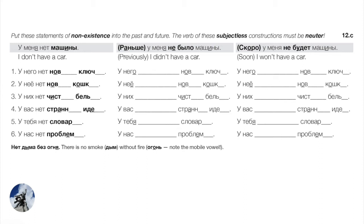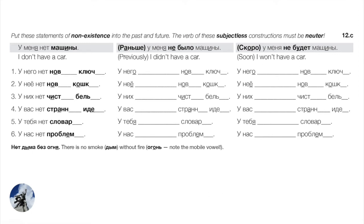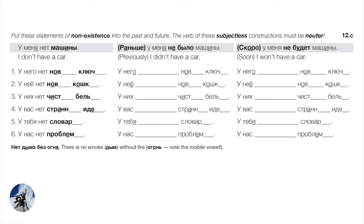Number five — словарь, a soft masculine noun. You don't have a dictionary: У тебя нет словаря. Because we write the я, we no longer need the soft sign. Словаря — the я shows us it's a soft stem. Past: У тебя не было словаря. Future: У тебя не будет словаря.